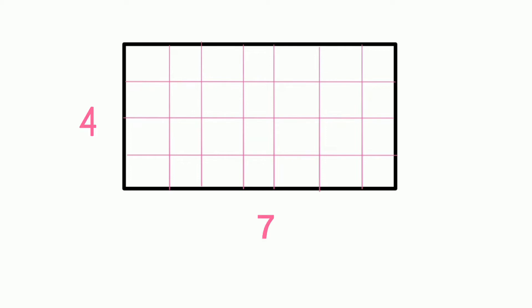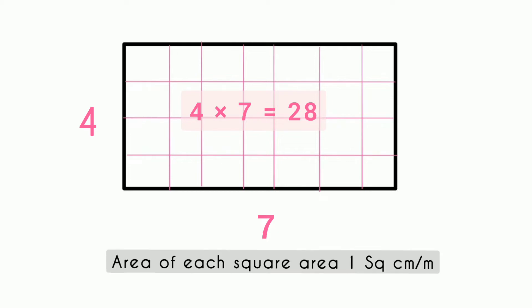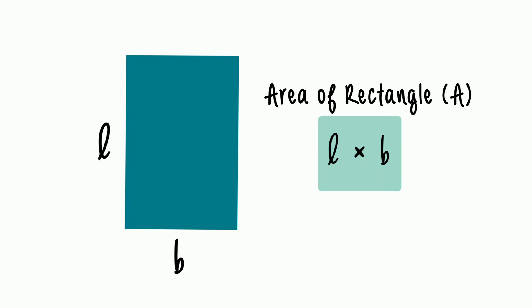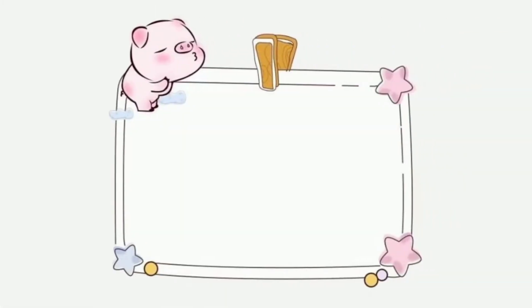In the length there are four squares and in the breadth there are seven squares, so the area of this rectangle will become 28. The area of each small square is 1 square unit — either centimeter or meter — depending upon the length and breadth. The formula for finding the area of a rectangle is length into breadth, that is the product of length and breadth.